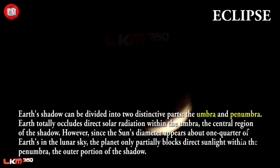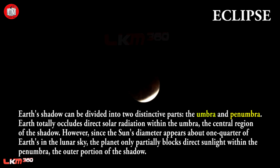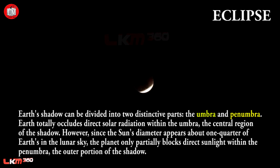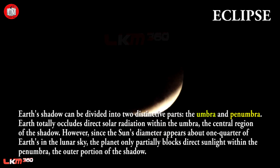Earth's shadow can be divided into two distinctive parts: the Umbra and Penumbra. Earth totally occludes direct solar radiation within the Umbra, the central region of the shadow. However, since the Sun's diameter appears about one quarter of Earth's in the lunar sky, the planet only partially blocks direct sunlight within the Penumbra, the outer portion of the shadow.